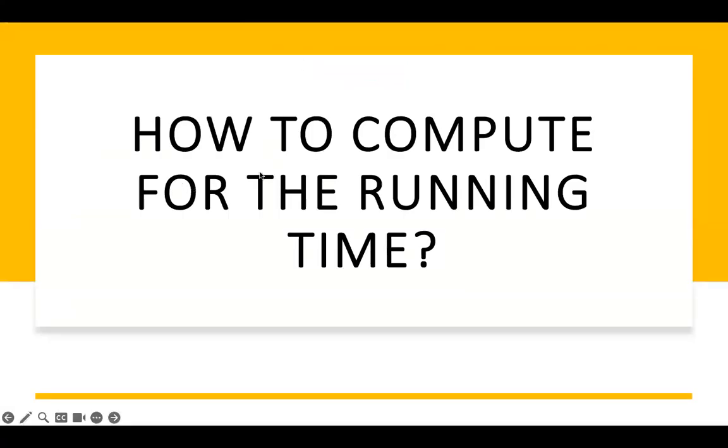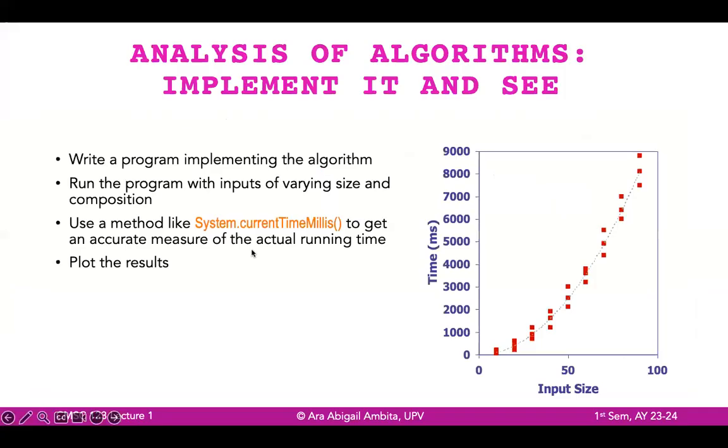Now, how do we actually compute for the running time given all these factors? One way to do it is to implement it and see. You can write a program implementing the algorithm. Run the program with inputs of varying sizes and composition. So assuming that you have already implemented the algorithm and run it in your computer, you can see that as you increase the input size, you will be able to see the running time. You can use a method like, in Java, system.currentTimeMillis to get an accurate measurement of the actual running time. And then you can plot the results and see.